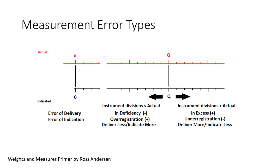The two kinds of error are just two sides of the same coin. When you deliver less, you indicate more. When you deliver more, you indicate less. But there's one additional piece of the model, the tolerance.